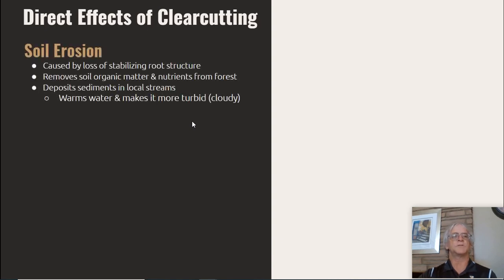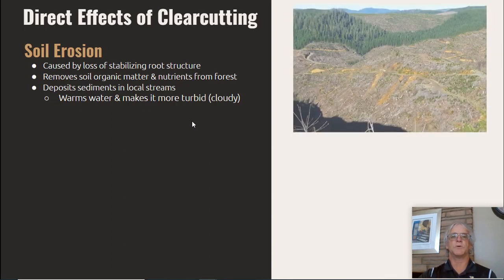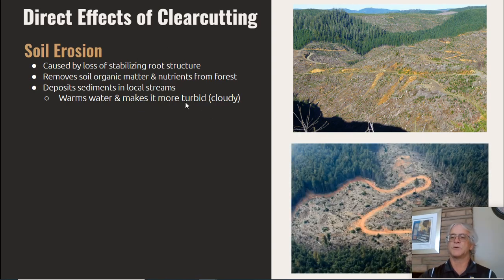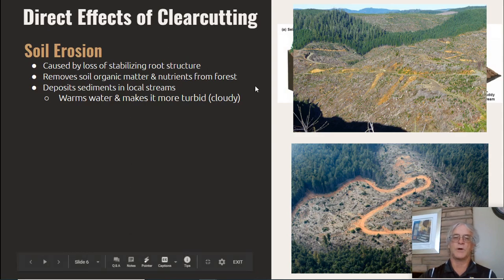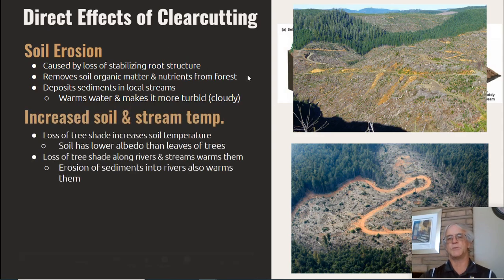Direct effects of clear cutting include soil erosion caused by loss of stability of the root structure. It removes organic material and nutrients from the forest, deposits sediments in local streams, and warms and makes the water more turbid. Increased soil and stream temperature occurs because there's not as much tree shading, which increases soil temperature. Also soil has a lower albedo than trees — more light is reflected by trees. Loss of tree shading along rivers and streams warms them, and erosion of sediments into the river also warms it because of the increased turbidity.